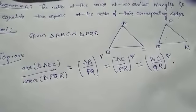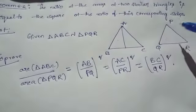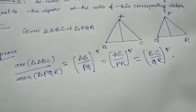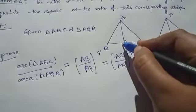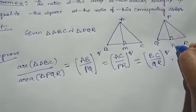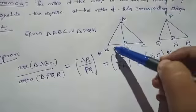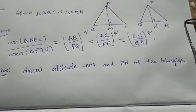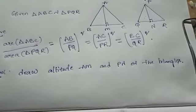Construction: draw AM perpendicular to BC and draw PN perpendicular to QR. Here this point is M and this point is N. Draw altitude AM and PN of the triangles.